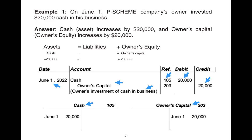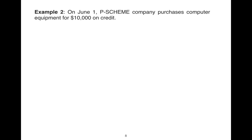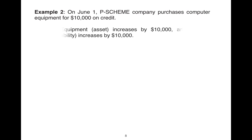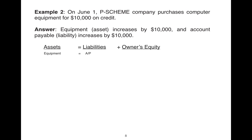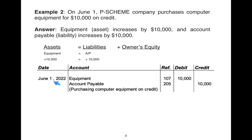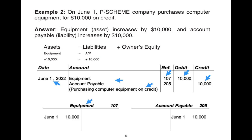In example two, Peace Scheme Company purchased computer equipment for $10,000 US dollar. The amount was not paid in cash — it was on credit. We have an increase in equipment by $10,000 and an increase in accounts payable by the same amount — plus $10,000 on both sides of the accounting equation. Our journal entry shows debit equipment and credit accounts payable. We do the posting using the T-account showing the date and amount on the debit side for equipment and on the credit side for accounts payable.